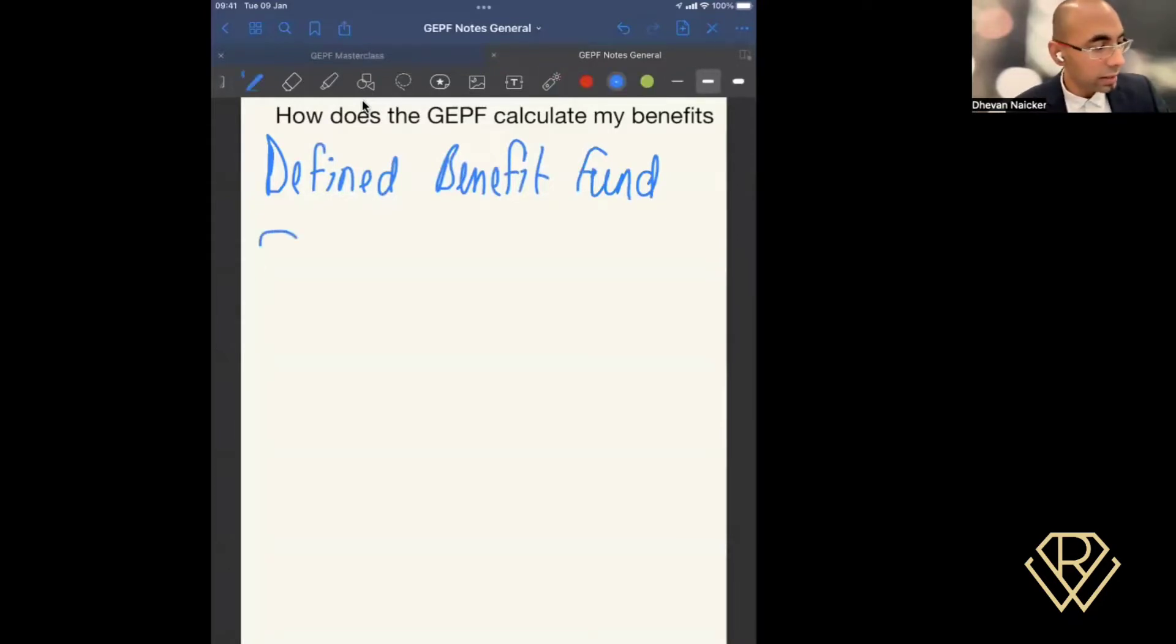meaning they are already calculated. There's a formula that is used for each of the aspects. So to help you understand this a lot better, because maybe you have a retirement annuity or savings, or you could have someone else, maybe your spouse that has a pension fund or provident fund that is not defined. And then it makes it a bit tough to understand. So here's how I want you to see it.